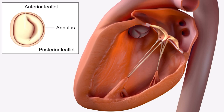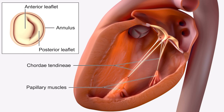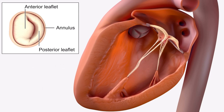Mitral valve prolapse. The mitral valve apparatus has four major components. The annulus is the circle of fibrous connective tissue on which the anterior and posterior valve leaflets are mounted. Cordae tendinae connect the leaflets to the anterior and posterior papillary muscles.